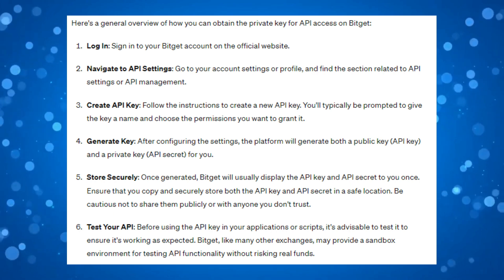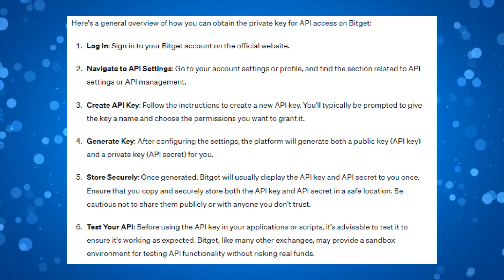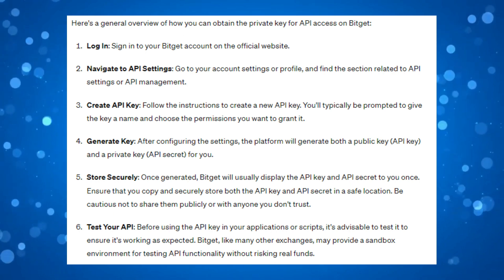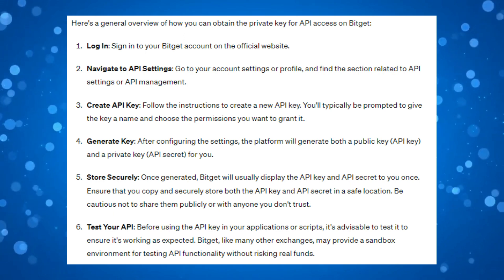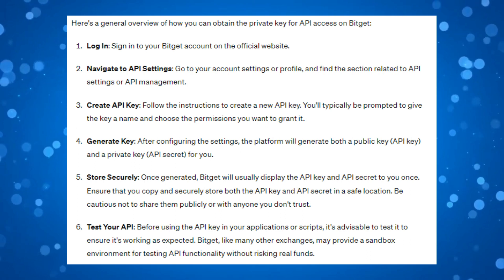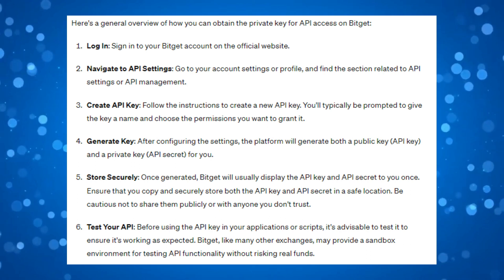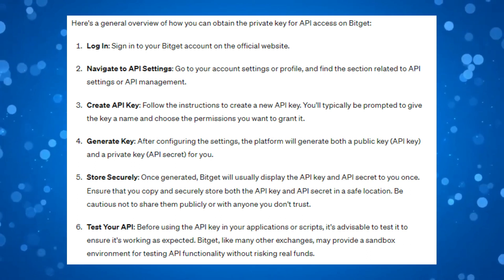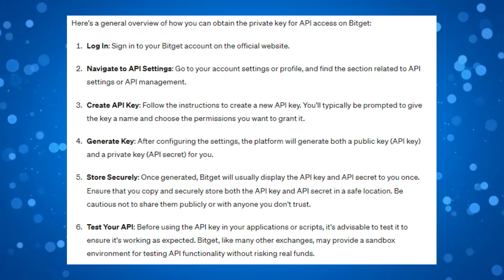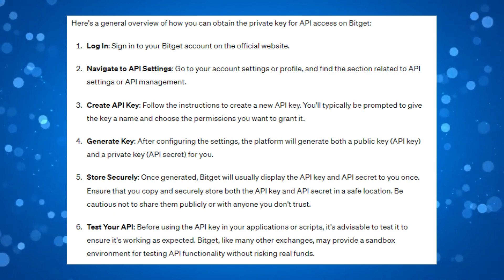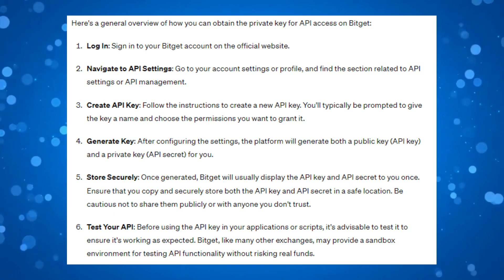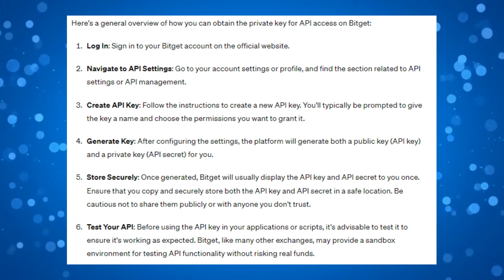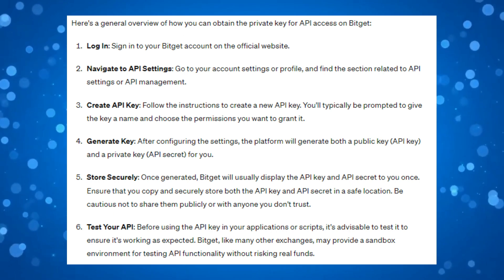Just bear in mind that the private key, the API secret, is crucial for authenticating requests to BitGet's API and it should be kept secure. If you suspect that your private key has been compromised, you should immediately revoke the API key associated with it and generate a new one.